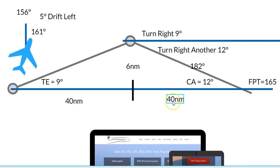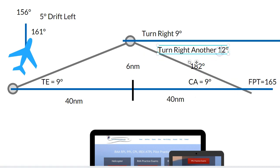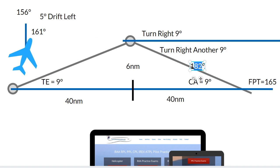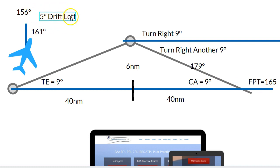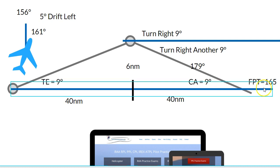You'd use your flight computer to calculate from your ground speed how long that's going to take, fly that interval, and then turn left. We're still experiencing five degrees of drift — that hasn't changed — so you would turn left and head onto 170.